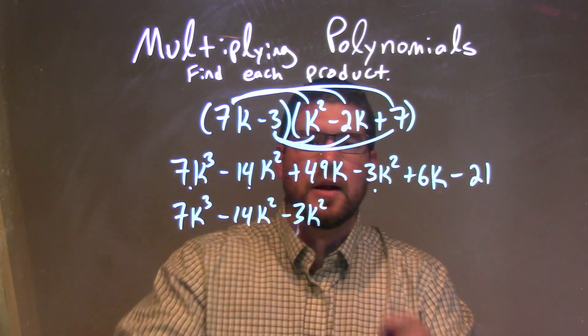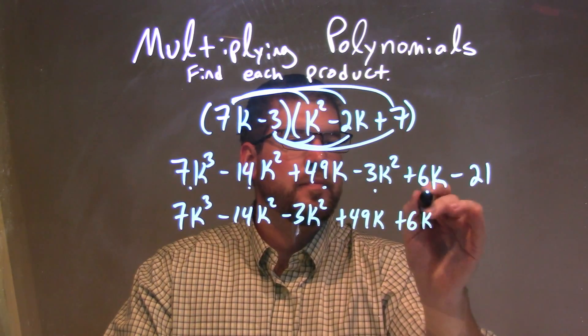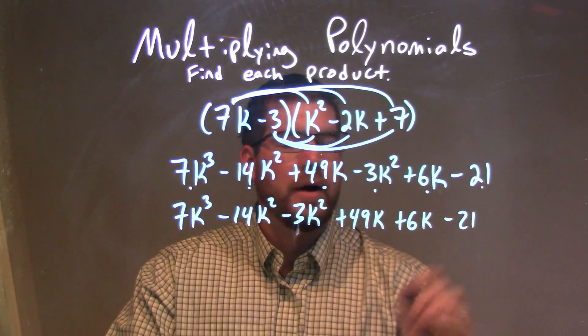Now we have just the k terms: 49k and 6k, and then minus 21 is all by itself on the right.